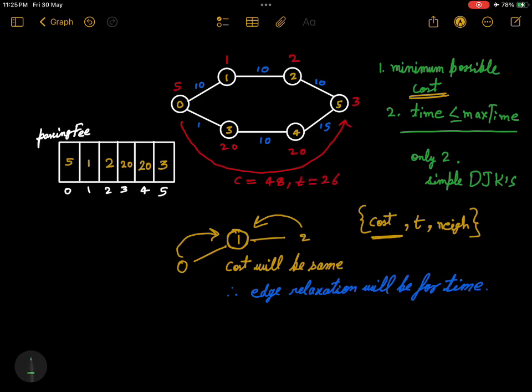If we move from 0 to 1 to 2 and 3, then cost will be 5 plus 1 plus 2 plus 3, which is 11, and time will be 30. If you see carefully, the time taken in the first case is less than the second case, but the cost is greater. So we will prefer the first path.